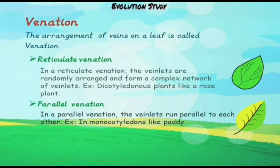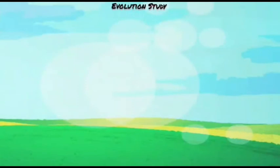An example of reticulate venation is dicotyledonous plants like the rose plant. Now what is parallel venation? In parallel venation, the veins run parallel to each other. An example is monocotyledons like paddy. Through this, you have learned what is a leaf and what are the types of leaf.